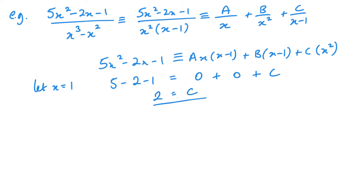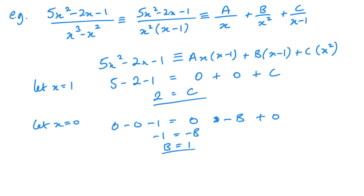For my second substitution, I can substitute x equals 0. Looking at that, I get 0 minus 0 minus 1, and I get 0 minus 1b plus 0. So minus 1 equals minus 1b, meaning b equals 1. Now for the third one, there isn't another number that will let me isolate a while getting rid of b and c. So I could compare coefficients — for instance, comparing coefficients of x squared — because I'll have an ax squared and a cx squared, and that should equal 5.